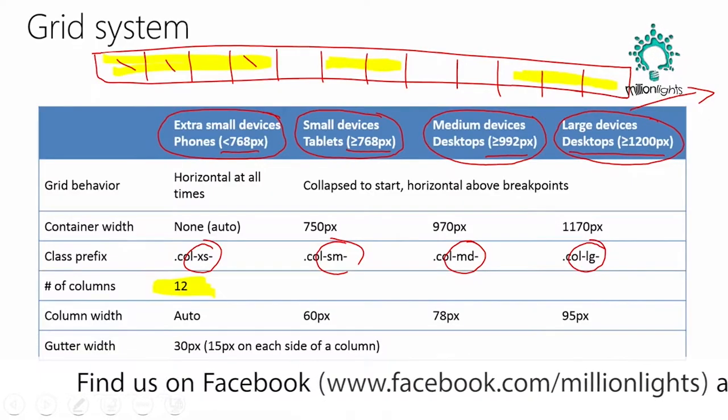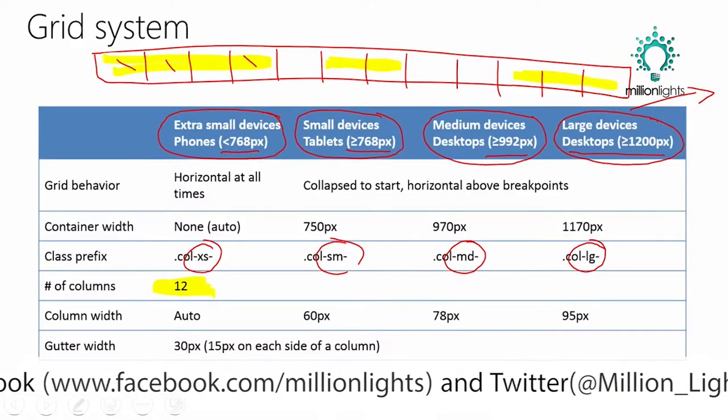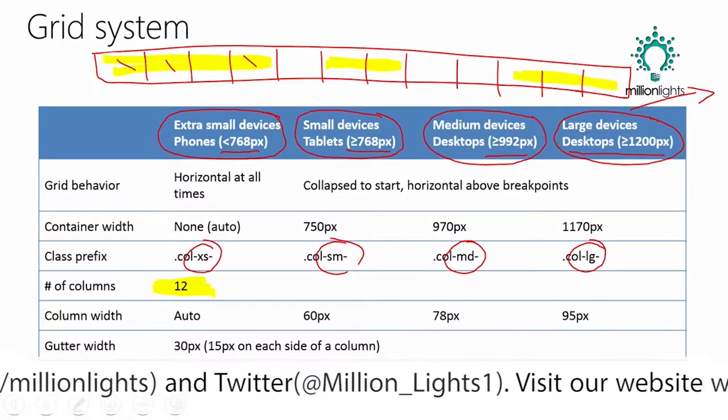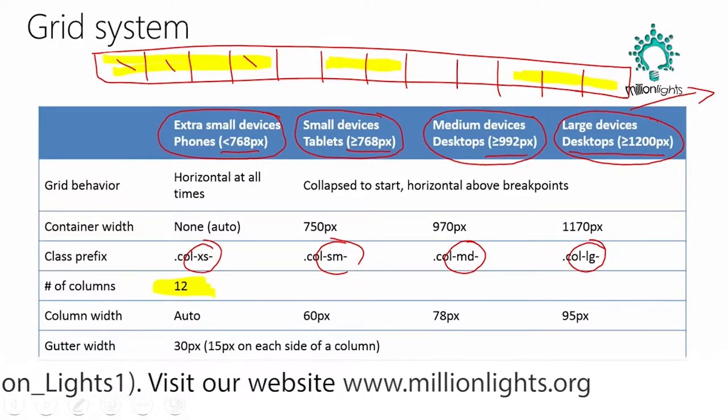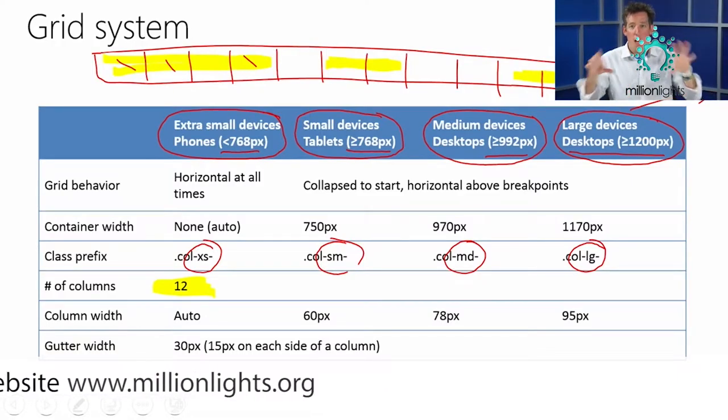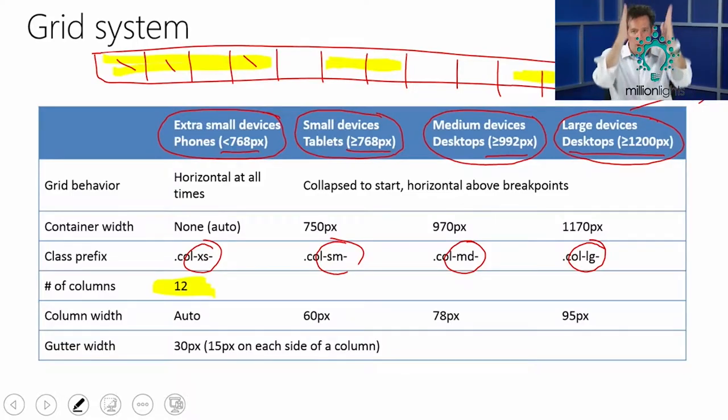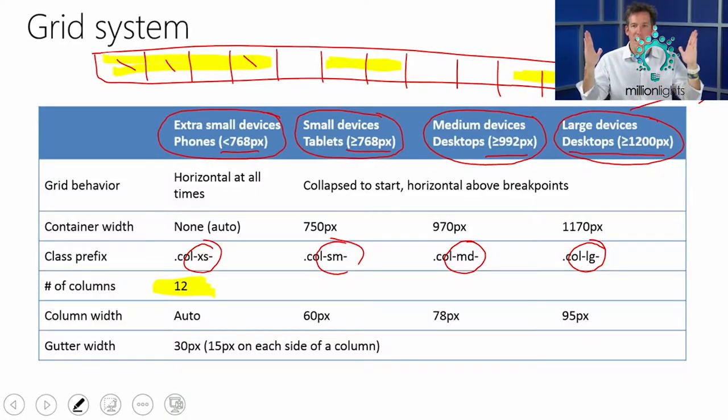One thing you may have noticed is that when I shrunk my window down, it didn't get very small until all of a sudden it became a single column. You had 12 columns with data spread across a row, you shrunk it down, and now all of a sudden it became vertical. The reason is that as you shrunk down in size, Bootstrap realizes it doesn't have a whole lot of horizontal space to work with, so it puts everything into one column. That way, instead of having to scroll left to right, all you have to do is scroll up and down.